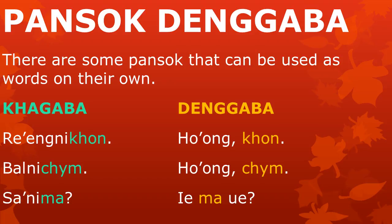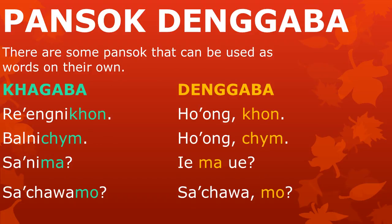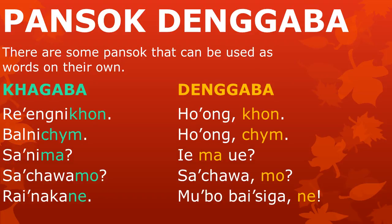The meaningful part 'ma' can be used bound, as in the word 'sa ni ma', but it is used as a word on its own in the sentence 'ye ma ue'. Then there is 'mo' — it is bound when we say 'sa ca wa mo', but it is a word on its own when we say 'sa ca wa mo' independently. The meaningful part 'ne' is bound when we say 'reikna ka ne', but it is not bound when we say 'mu'bo bai shiga ne'.